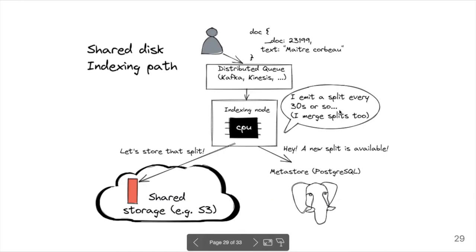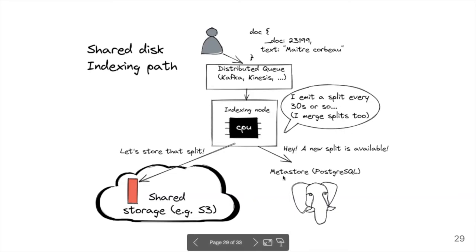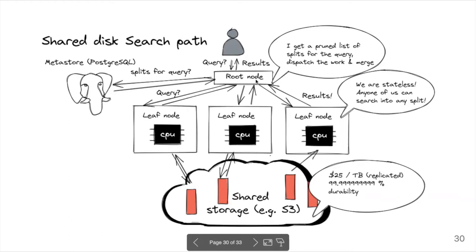We wait about 30 seconds — we could do 15 seconds, but not much less — to accumulate enough documents before uploading to S3. So our time to search is not as good as Elasticsearch's. Once a split is uploaded to S3, we update a metadata layer saying there's new data available. On the search path, the root node queries the metadata layer to find relevant splits, then distributes work to leaf nodes. Each leaf node works on a subset of splits, goes to S3 to get needed data, performs computation, and answers the root node, which may perform additional aggregation before returning the final result.